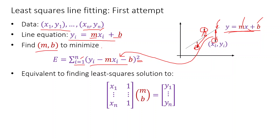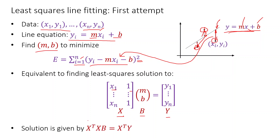This is equivalent to finding the least squares solution to this matrix equation. We can see that x₁·m + 1·b = y₁, and so on. We signify this as matrix X, the parameter vector as b, and the output as y. Matrix X has the x-coordinates and a column of ones. The solution is given by XᵀX·b = Xᵀy, so b = (XᵀX)⁻¹Xᵀy.